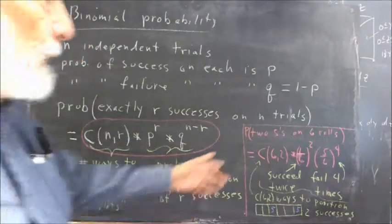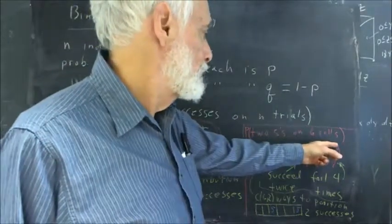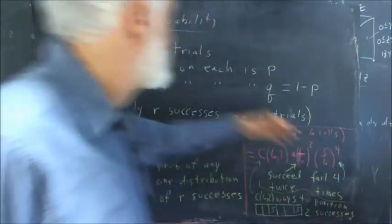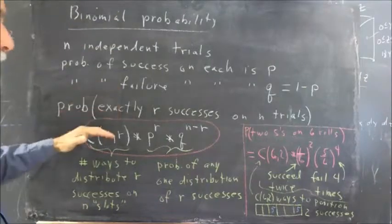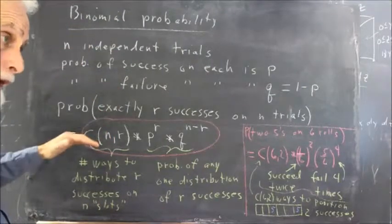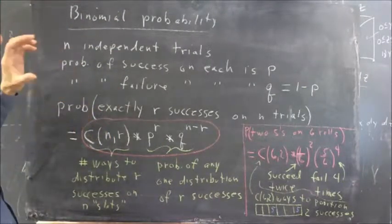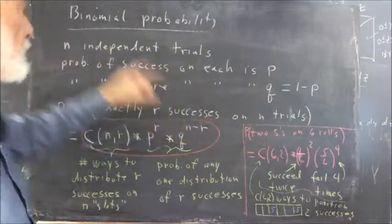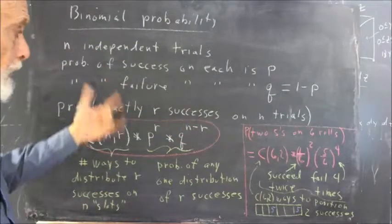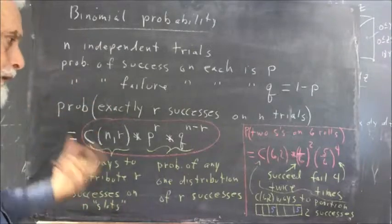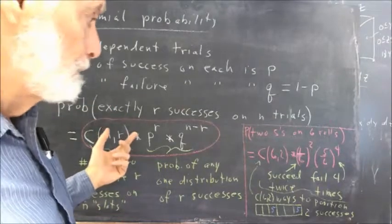For example, the probability of two fives on six rolls. See if you can, by yourself, pause for a second, see if you can apply these conditions. Does this situation satisfy the conditions? Can you identify n? Can you identify r? Can you figure out P? Can you figure out Q?